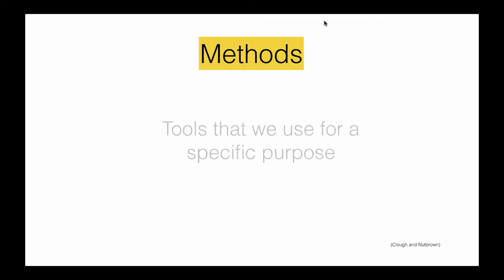According to Klo and Nuttbrown, the methods we use in research are the result of all other questions and decisions we make as part of a methodology. For them, there is a relationship between the method you choose and your particular needs and purposes, which depend on the topic you are interested in and the questions you ask about it. Methods are tools — a means to an end that we use for a specific purpose.